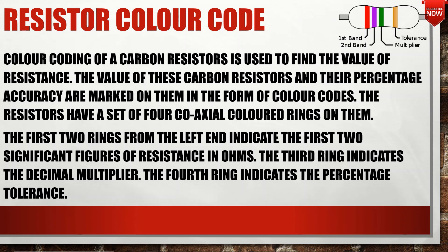Resistor color code. Color coding of a carbon resistor is used to find the value of resistance. The value of these carbon resistors and their percentage accuracy are marked on them in the form of color code. The resistors have a set of four coaxial colored rings. The first two rings from the left end indicate the first two significant figures of the resistance in ohms. The third ring indicates the decimal multiplier. The fourth ring indicates the percentage tolerance resistance.